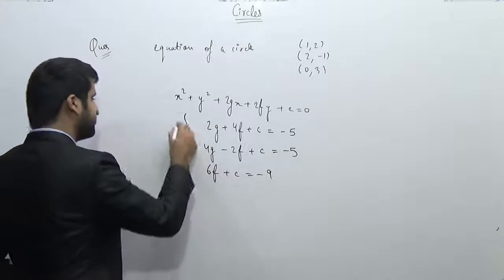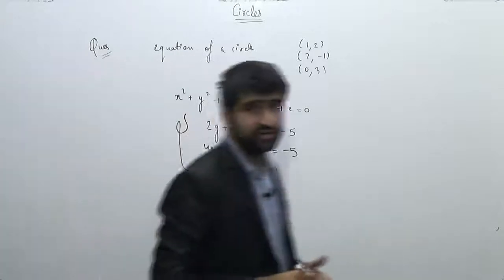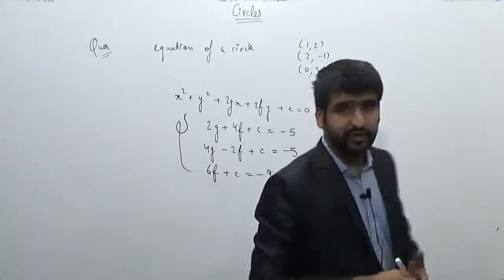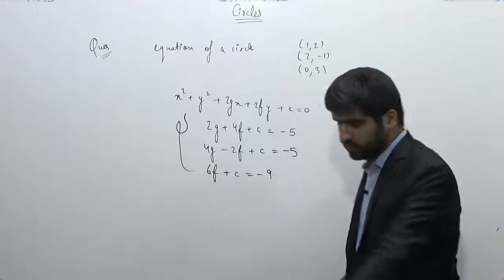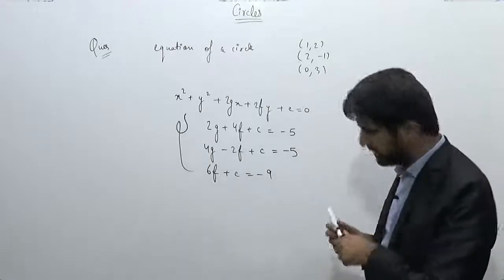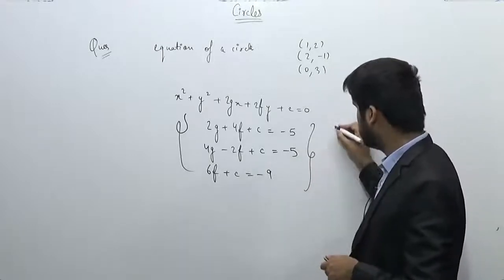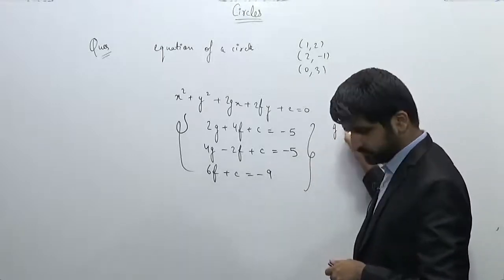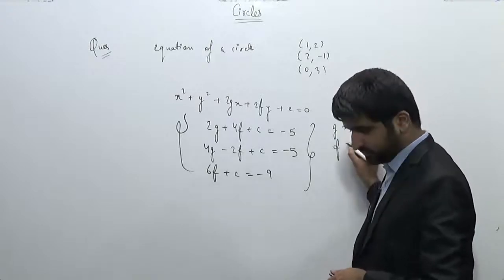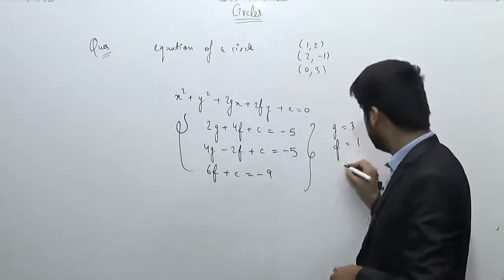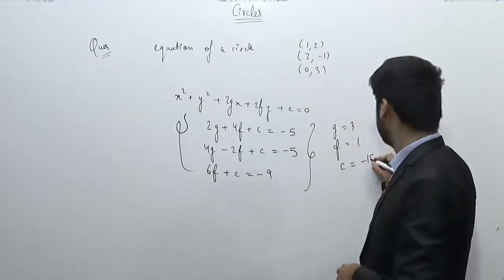So we have three equations and we just need to solve them to get the values of g, f, and c. On solving, g = 3, f = 1, and c = -15.